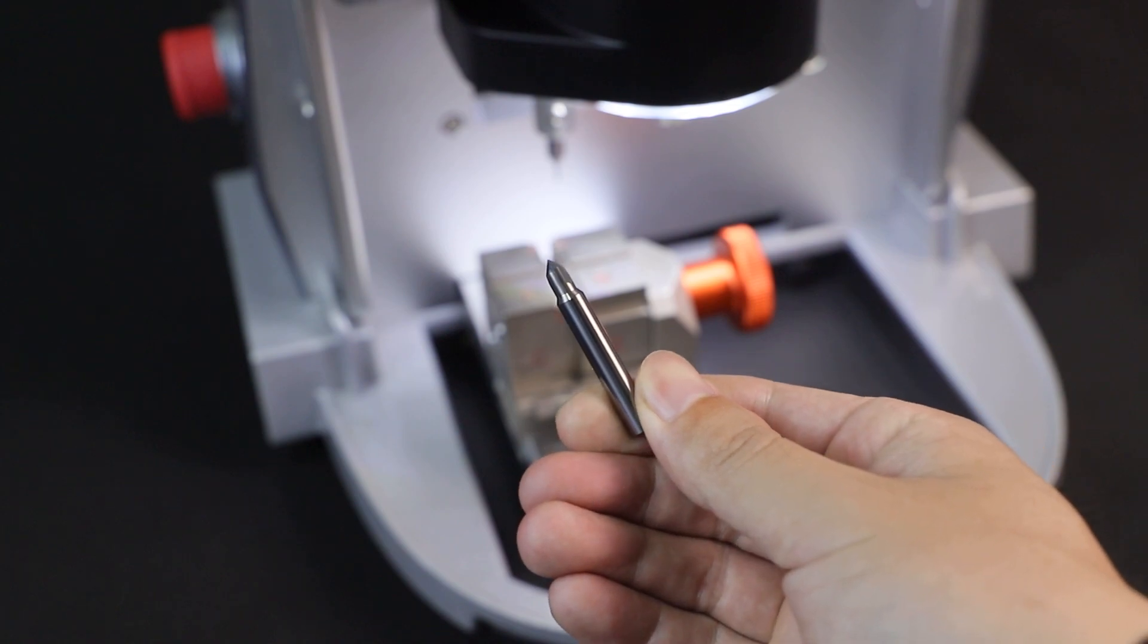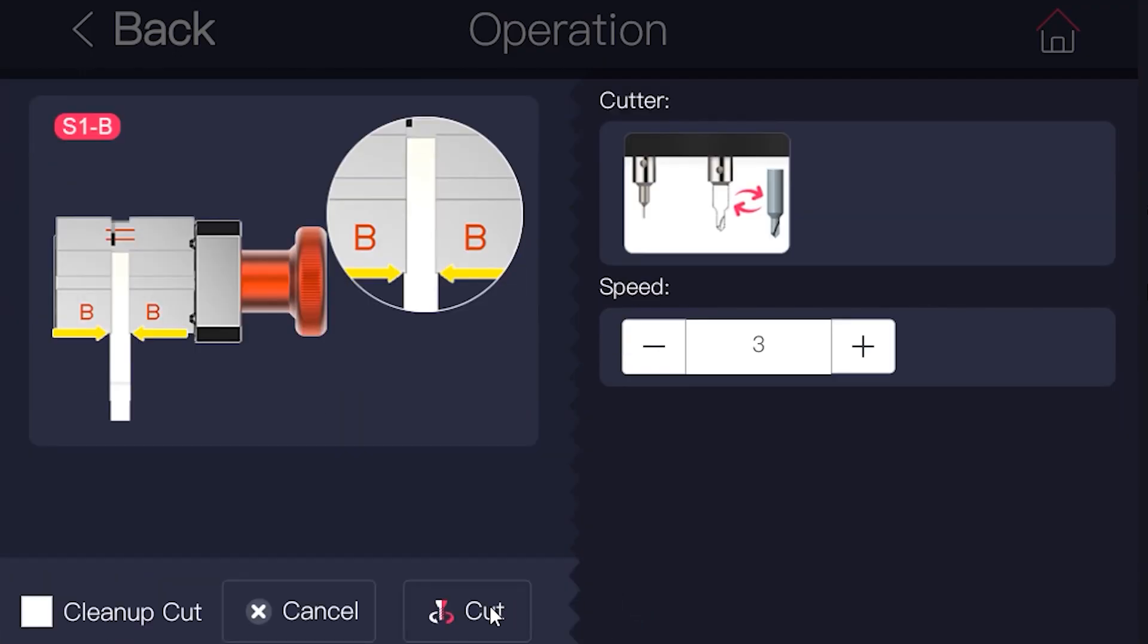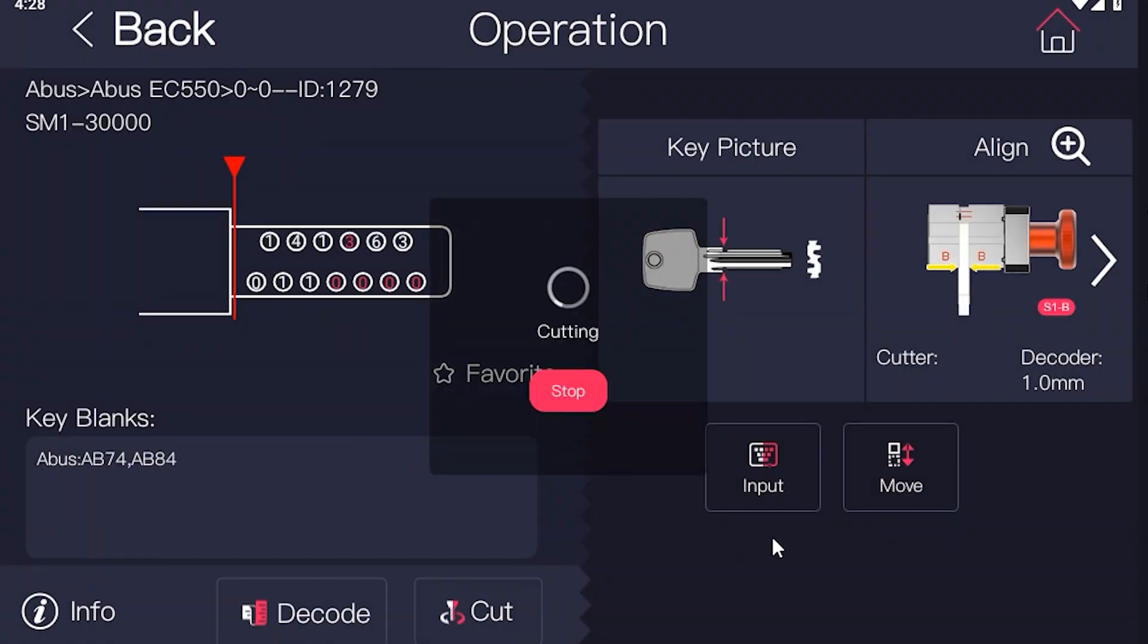Install a dimple cutter. Make sure the key is fixed flatly and the jaw is clean of shavings. Then click cut to start cutting.